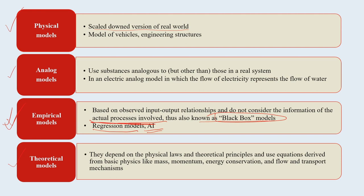Theoretical models depend on physical and theoretical principles. In theoretical models, we use equations derived from basic physics like mass, momentum, and energy conservation, and flow and transport mechanisms - theoretical models are largely based on those principles. So we have discussed mathematical models, physical and analog models, empirical models, and theoretical models.